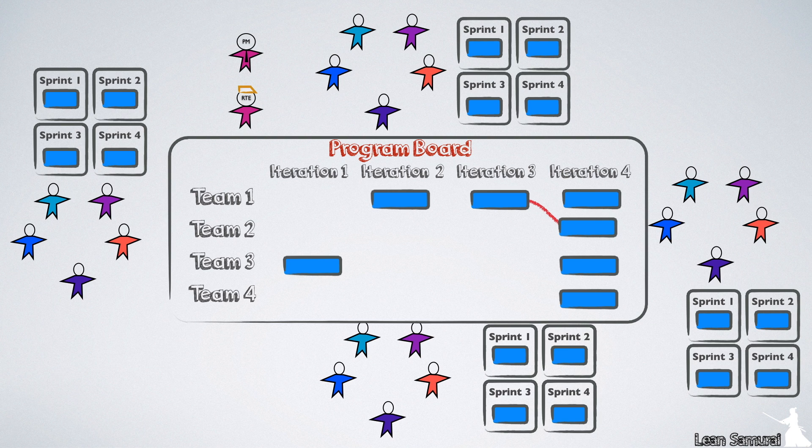While identifying dependencies with other teams on the train, as well as risks, the teams commit to these PI objectives as a group, providing visibility to business owners and customers of what they can expect in this PI.